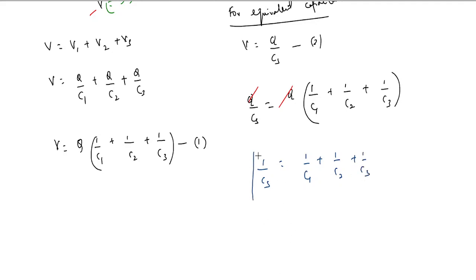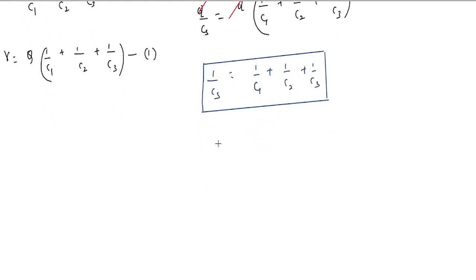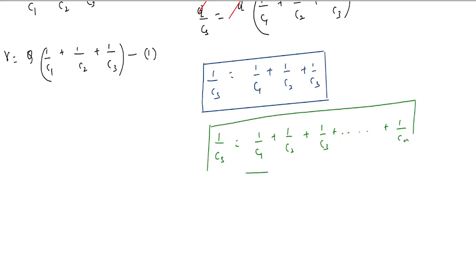This is the required expression for equivalent capacitance in series for three capacitors. To define it formally: the reciprocal of the equivalent capacitance equals the sum of the reciprocals of the individual capacitances. For n capacitors, this generalizes to: 1/C_s = 1/C1 + 1/C2 + 1/C3 + ... + 1/C_n.